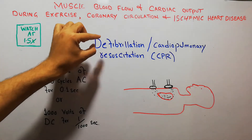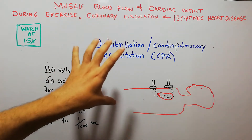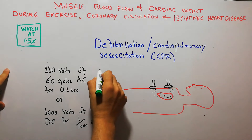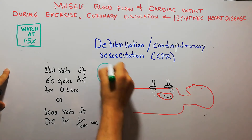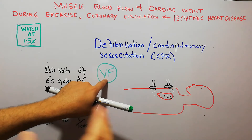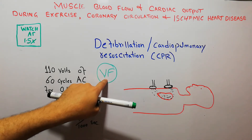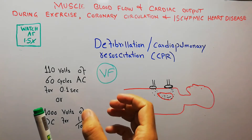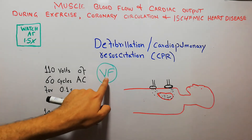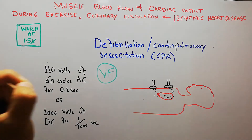Defibrillation is basically used for ventricular fibrillation and ventricular tachycardia, which are the most important shockable rhythms. In our last lecture we discussed ventricular fibrillation, which is one of the most important causes of death after acute coronary occlusion, acute myocardial infarction, or heart attack. In ventricular fibrillation, the impulse is so disturbed that there is no proper contraction — just vibration of the heart, no proper pumping and cardiac output — and it can lead to death within minutes if not treated.